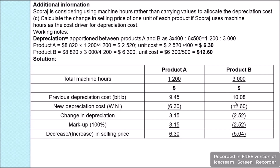For product B, the previous depreciation was $10.08 and the new depreciation is $12.60 — an increase of $2.52. With 100% markup, the impact is $2.52 + $2.52 = $5.04 increase. Therefore, the selling price of product B increases by $5.04.